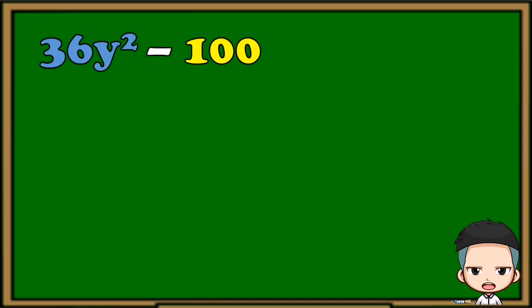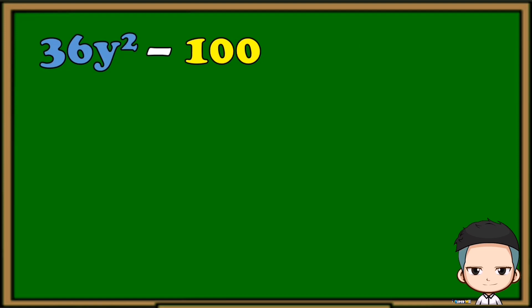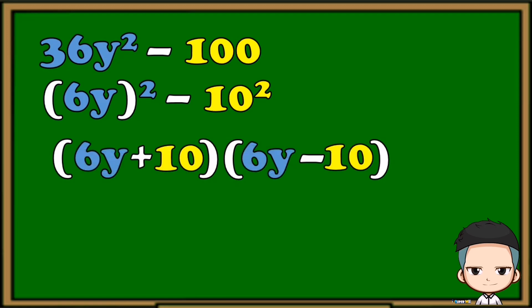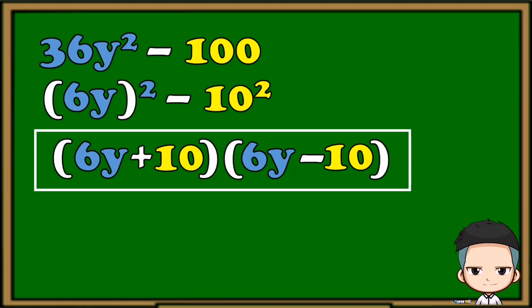Are the two terms perfect squares, and is the operation subtraction? Yes! So let's factor them using difference of two squares. First, we're going to put them in their squared forms, then prepare the parentheses and copy the base of each term. Make sure you follow the pattern for where you put each base. Our final answer: the factored form of 36y squared minus 100 is the quantity of 6y plus 10, multiplied by the quantity of 6y minus 10.